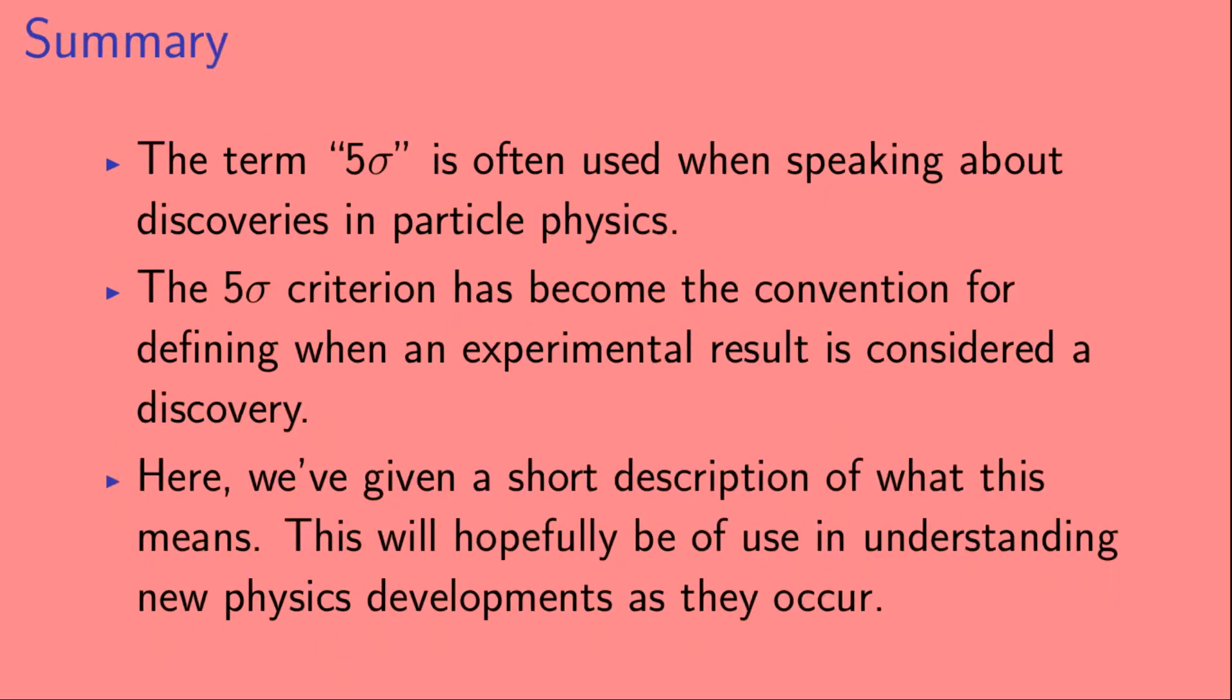Okay, so let's summarize. The term 5 sigma is often used when speaking about discoveries in particle physics. The 5 sigma criterion has become the convention for defining when an experimental result is considered a discovery. Here, we've given a short description of what this means. This will hopefully be of use in understanding new physics developments as they occur.